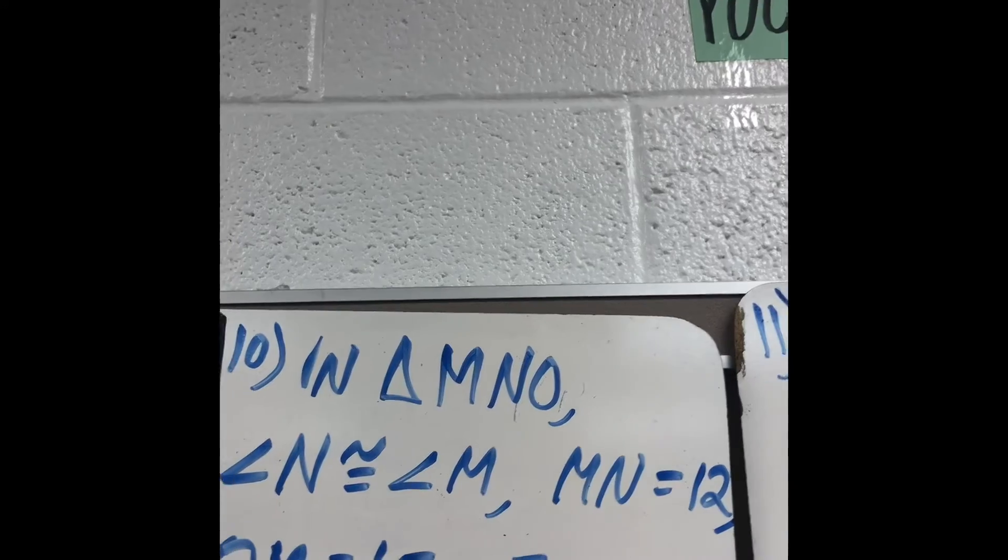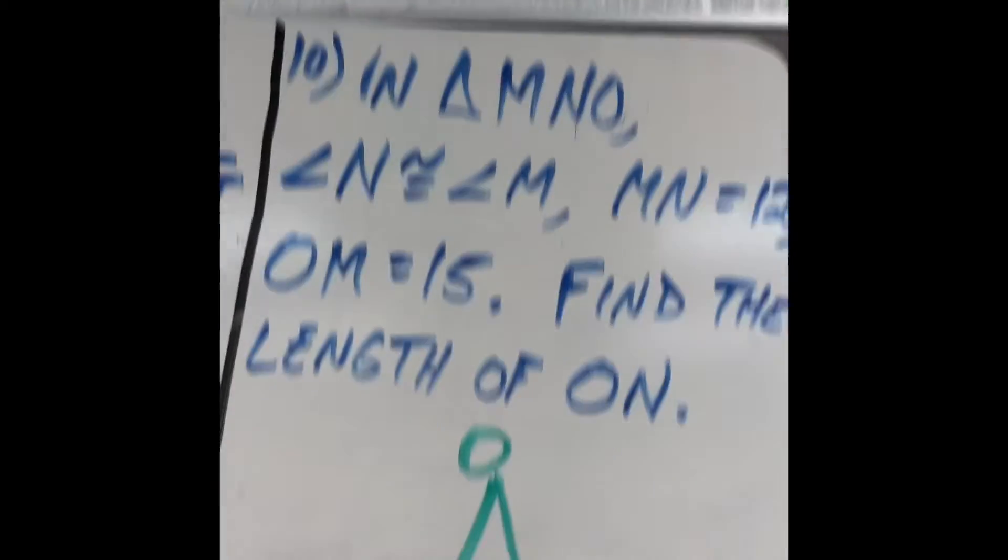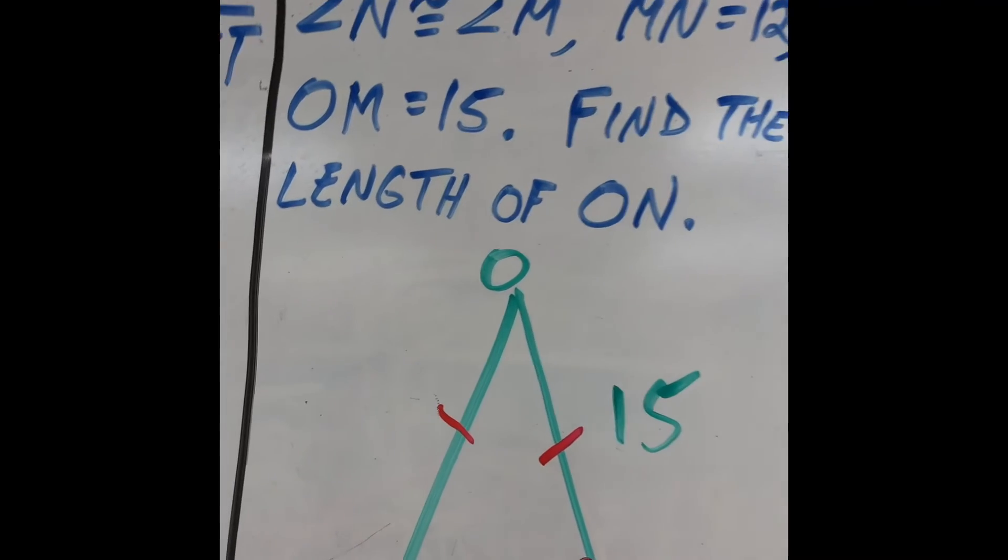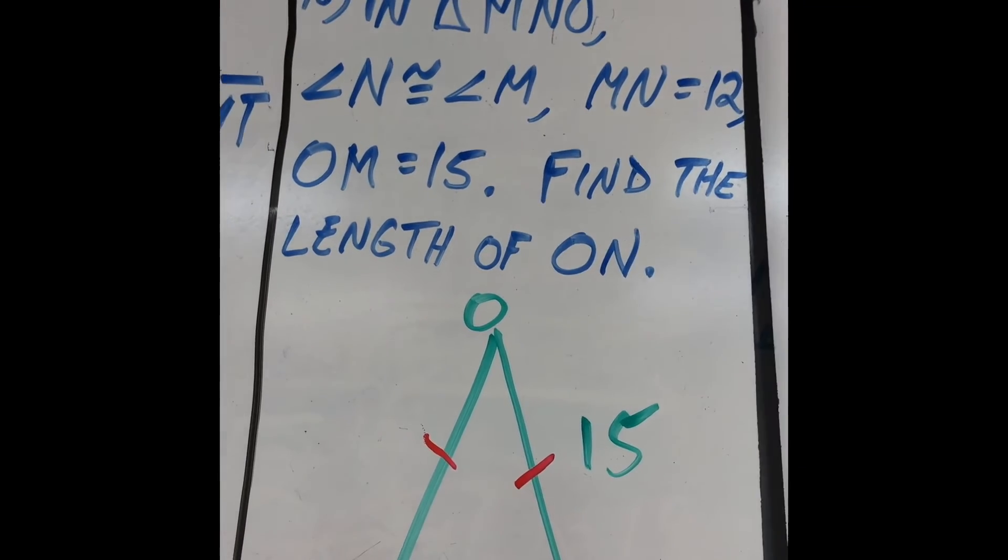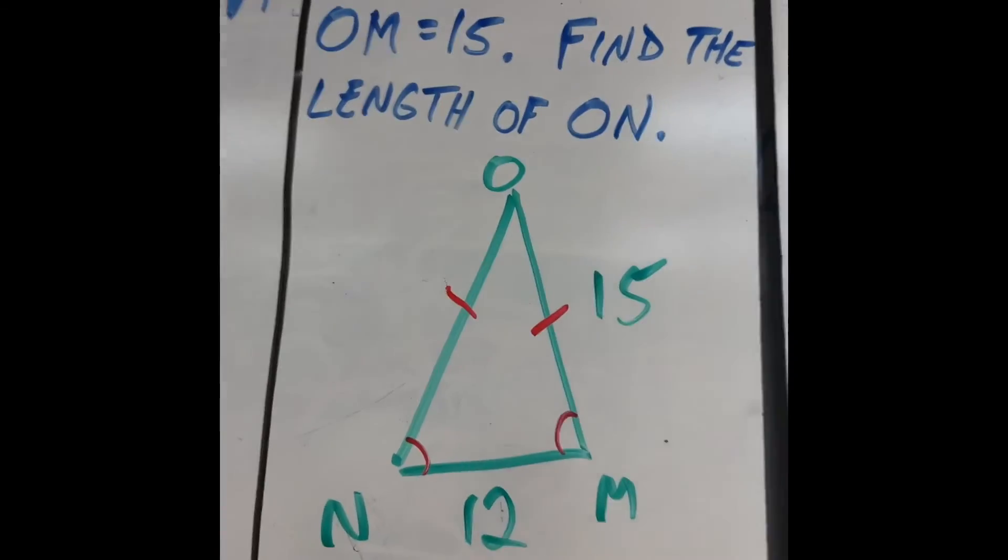Over here. M and O. Angle N is equal to angle M. Okay, so draw yourself a picture. O, M is 15. What's O, N? That's also 15. Don't let the 12 throw you off.